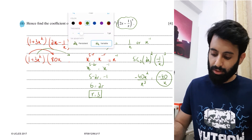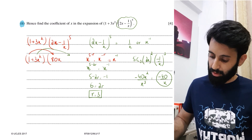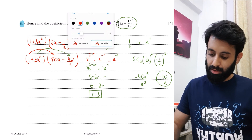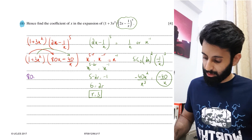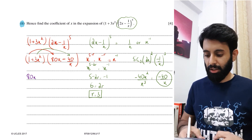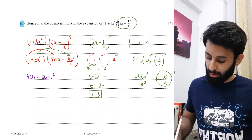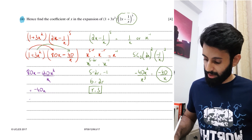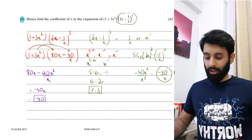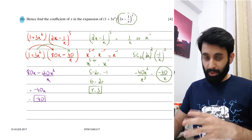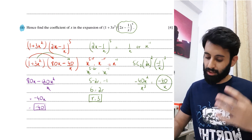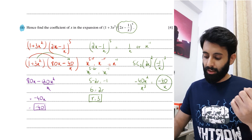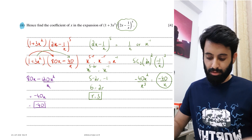Now we plug both findings in. We have 1 × 80x = 80x, and 3x² × (−40/x) = −120x. Adding: 80x − 120x = −40x, so the final answer is −40. With questions like these you need to be careful and watch out for these little traps — make sure you're not missing anything that might contribute to the required coefficient.